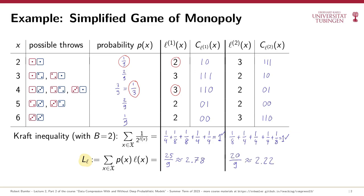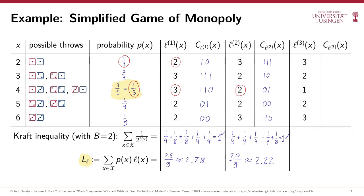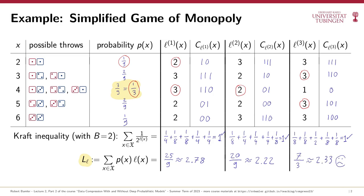Shouldn't we try to make codewords even shorter? For instance, symbol x=4 has higher probability than symbols 3 and 5, so shouldn't it get a shorter codeword? If we try to shorten just that one codeword without changing anything else, the new target codeword lengths would violate the Kraft inequality, so no uniquely decodable code exists with those lengths. But we could make a trade: make the codewords for symbols 3 and 5 one bit longer each, so the Kraft inequality is again satisfied. However, it turns out we've actually increased the expected codeword length, so the choice of optimal target codeword lengths is not obvious.